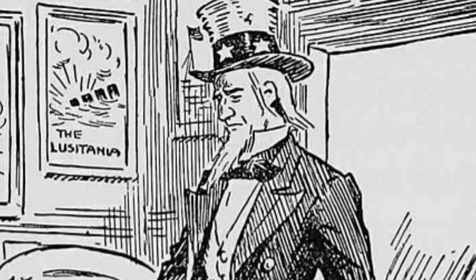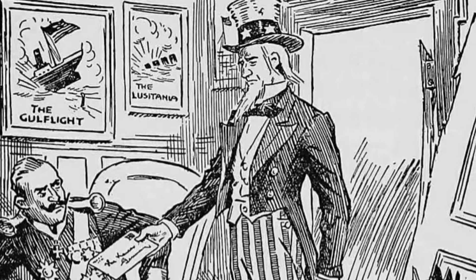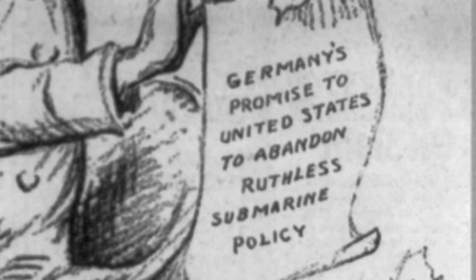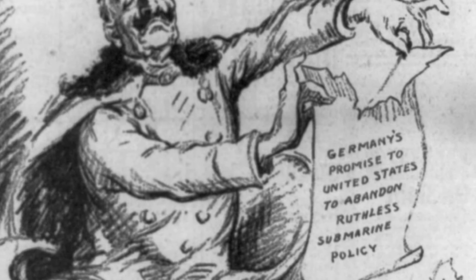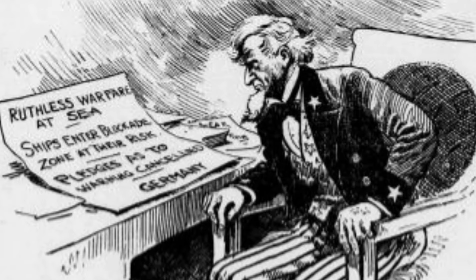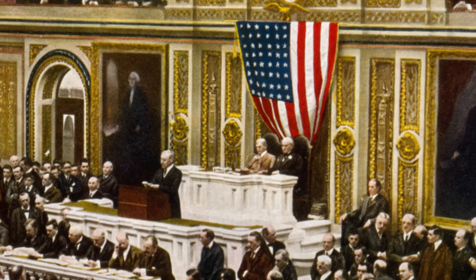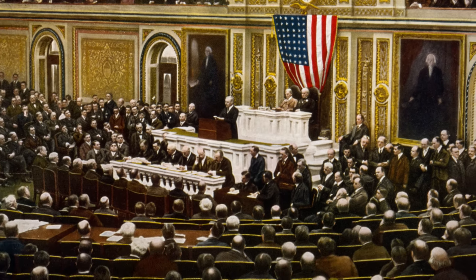unrestricted submarine warfare was essentially abandoned on 1 September. However, facing an increasingly desperate situation, on 31 January the next year, Kaiser Wilhelm signed an order for unrestricted warfare to resume the following day. President Wilson of the USA subsequently severed all diplomatic relations with Germany, and the US Congress declared war on 6 April 1917.